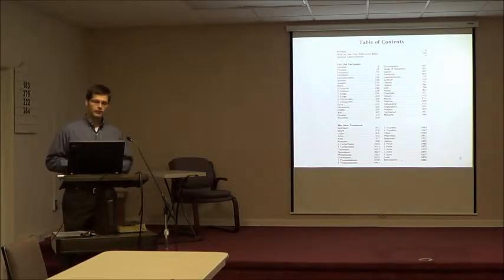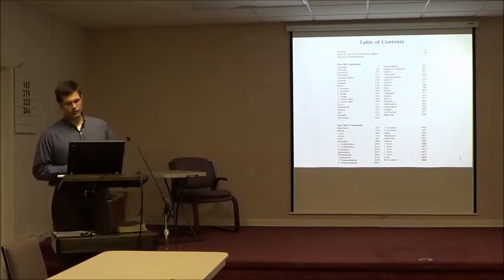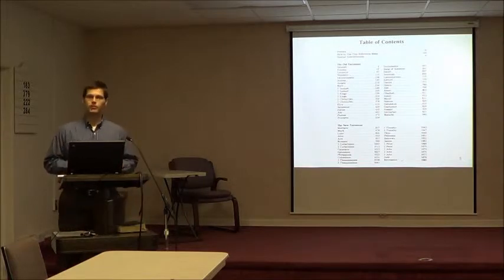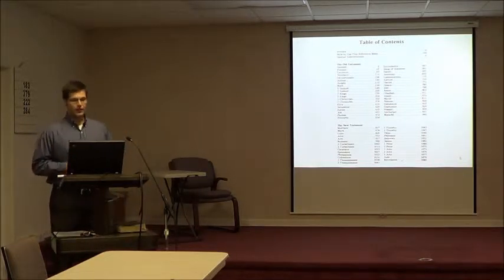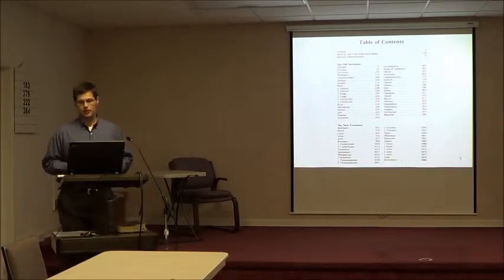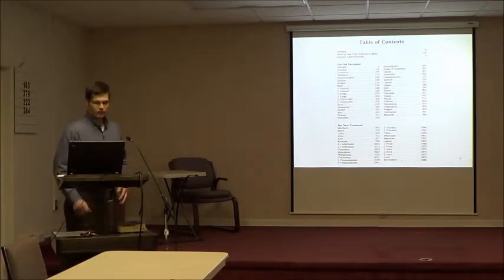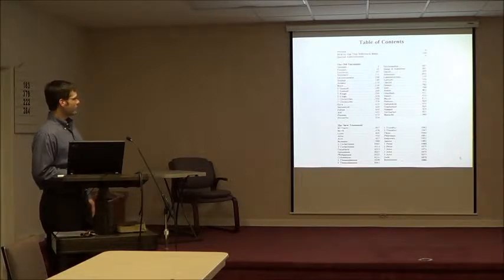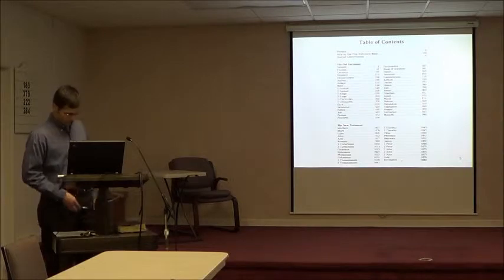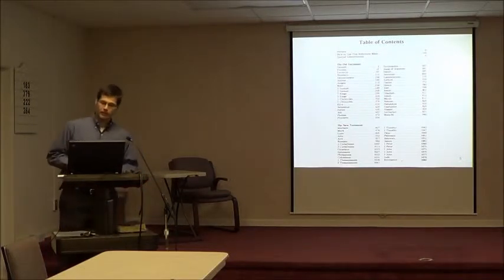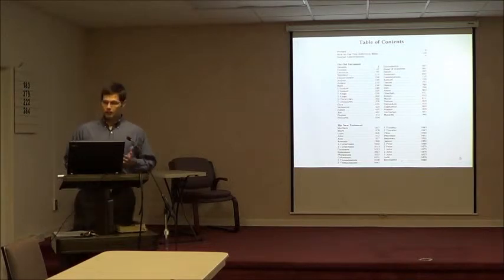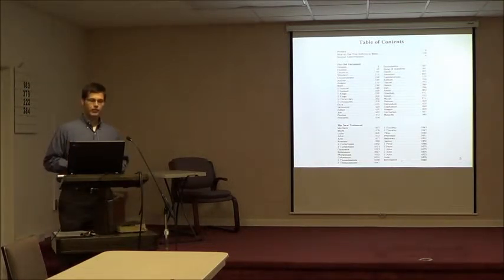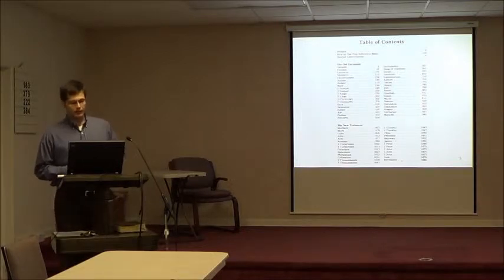The table of contents is helpful when navigating your Bible because it's not always easy to find where each book begins. We can turn to the table of contents — usually in the first few pages — and locate the page number corresponding to the beginning of any book. The 39 Old Testament books run from Genesis through Malachi, and the 27 New Testament books run from Matthew through Revelation, which in my Bible begins on page 1080.